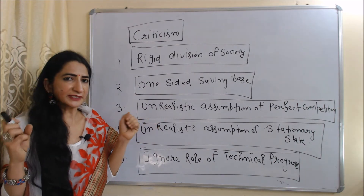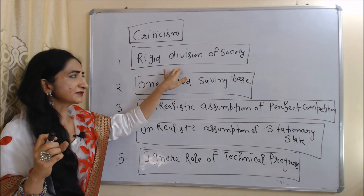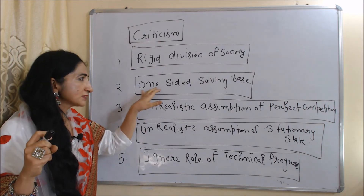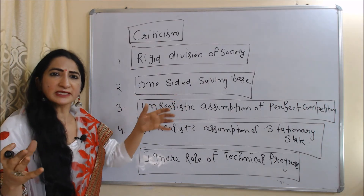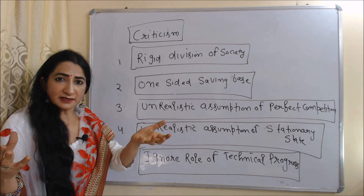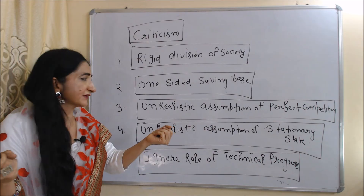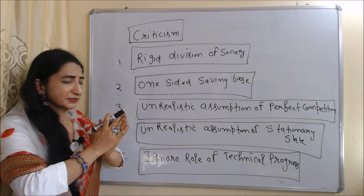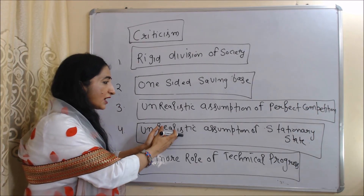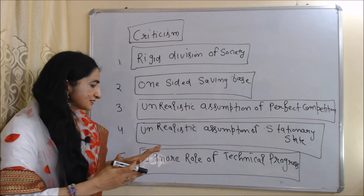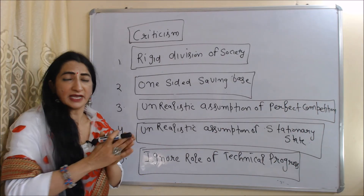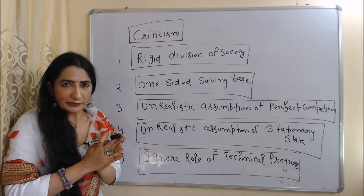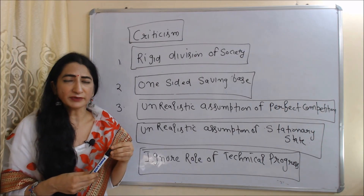Now the criticism of this theory: First, rigid division of society — the theory is based on a rigid division between capitalistic class and labor class. Second, one-sided saving base — only the capitalistic class can save, but in reality salary-based and wage-based employees can also save. Third, unrealistic assumption of perfect competition. Fourth, unrealistic assumption of stationary state. Fifth, this theory ignores the role of technical progress, which is essential for economic growth.